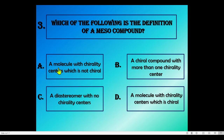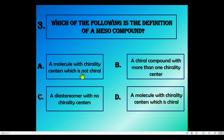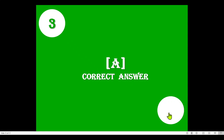Option A: a molecule with a chirality center which is not chiral. Option B: a chiral compound with more than one chirality center. Option C: an isomer with no chirality center. Option D: a molecule with a chirality center which is chiral. The meso compound has a chirality center but due to the presence of a symmetry element the compound is achiral. So option A is the correct answer for question three.